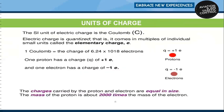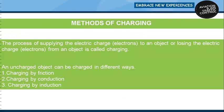A single elementary charge is the charge that a single proton or electron possesses. The coulomb is a standard international derived unit of electrical charge. One coulomb is equal to the charge carried by 6.241 multiplied by 10 to the power of 18 electrons. The process of supplying the electrical charge or electrons to an object, or losing the electrical charge from an object, is called charging.